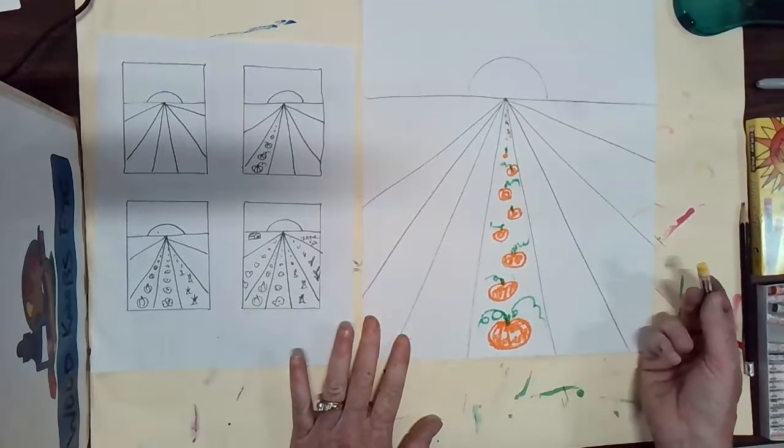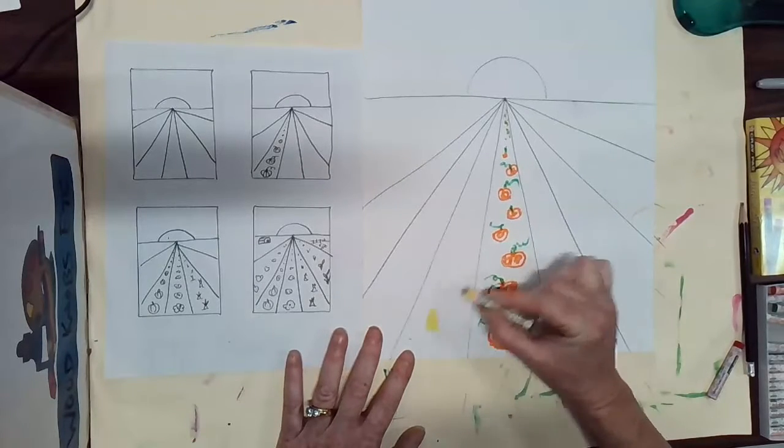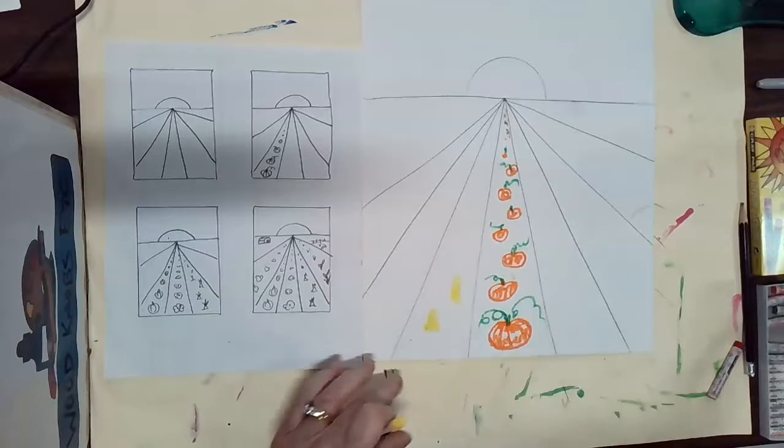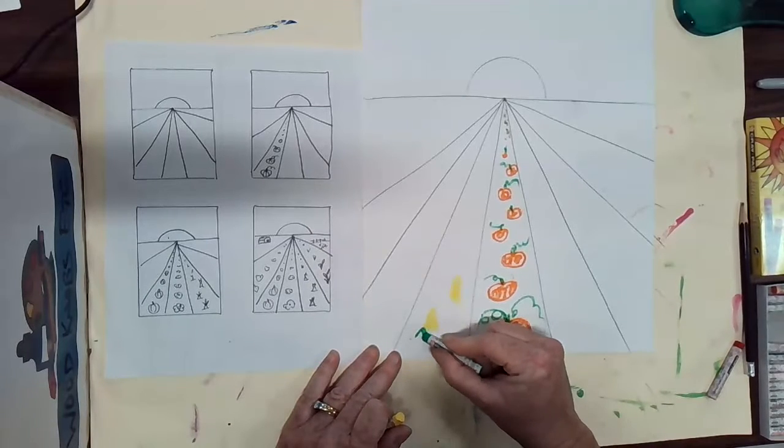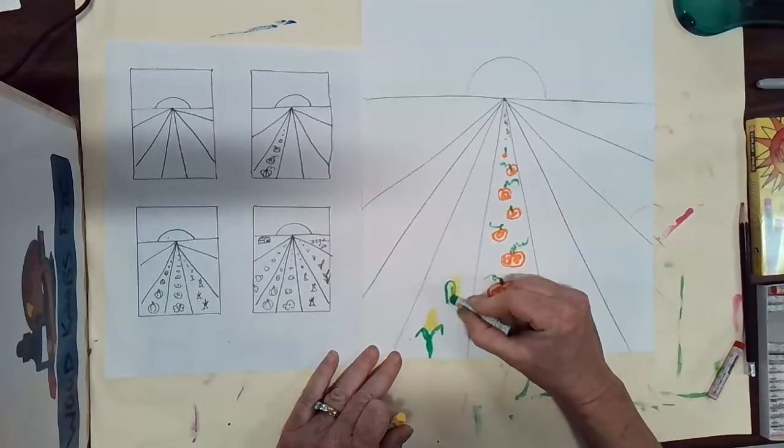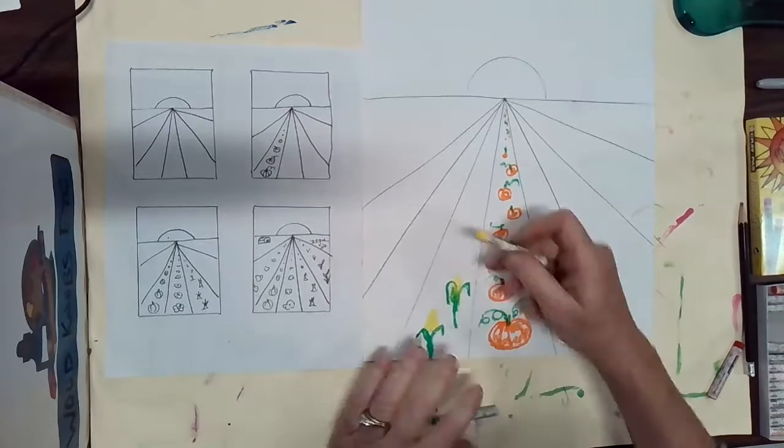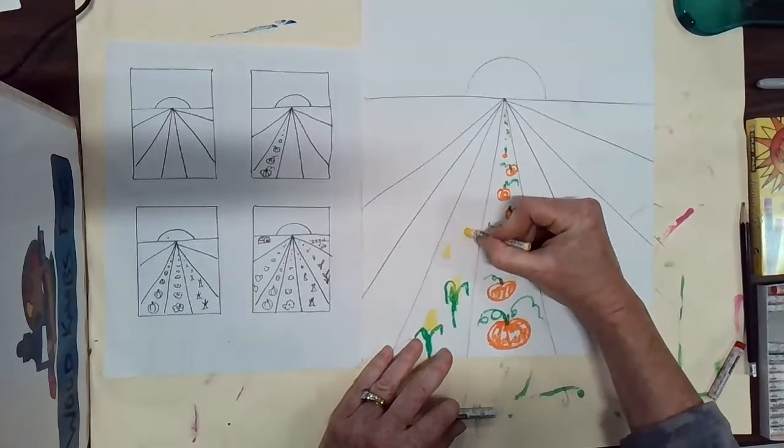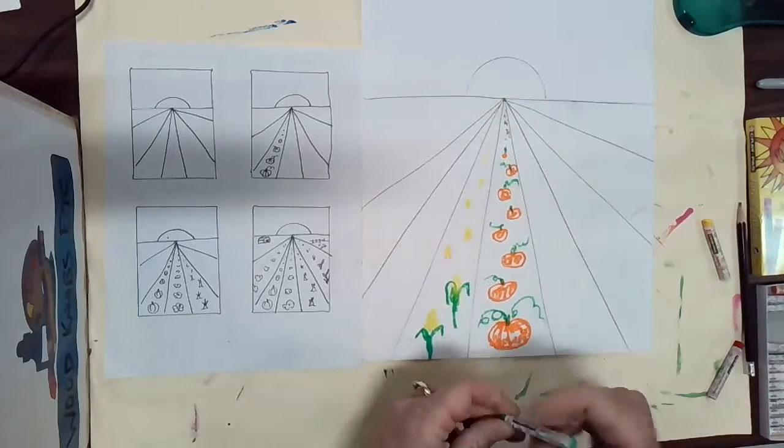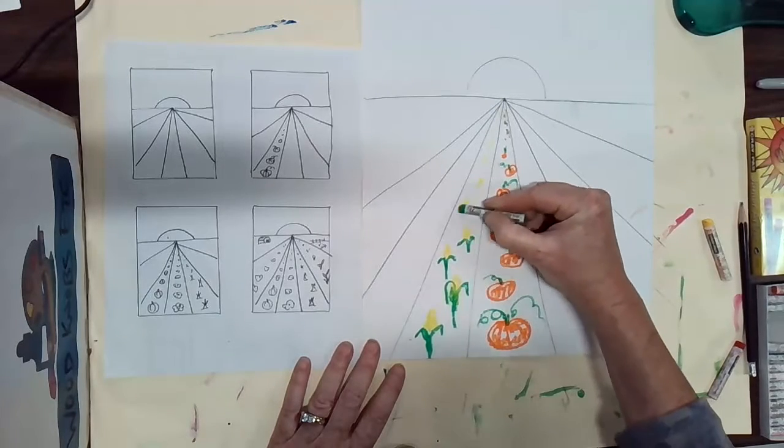I'm thinking maybe I'll add some corn. Maybe I'll make some corn. An easy way to make corn is to make a yellow sort of a V-shape and then take my green and make some leaves that kind of come down like this. Some tall things and then maybe I can make some more going back further into the distance. And way back there remember I'm just doing some little dots. So here's some corn in my field.